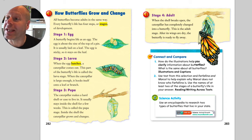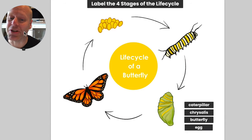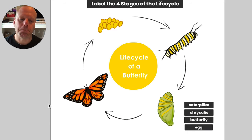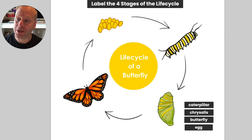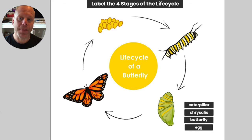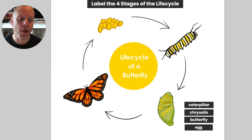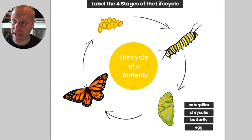What I would like you to do is label the four stages of the butterfly's life cycle that we just talked about: the egg, the caterpillar, the chrysalis, and the butterfly.